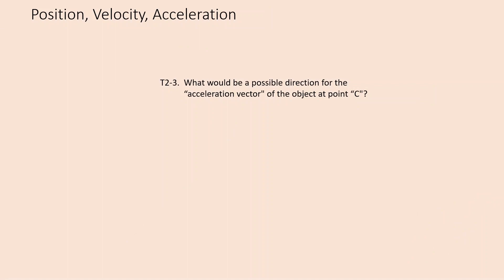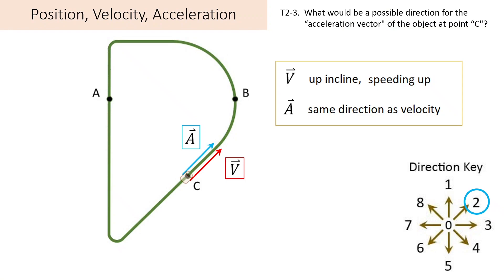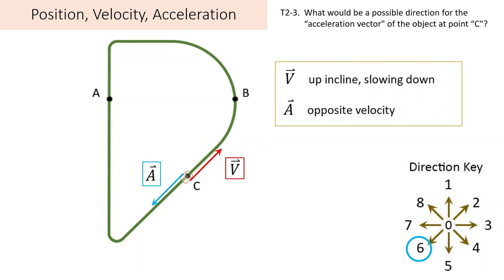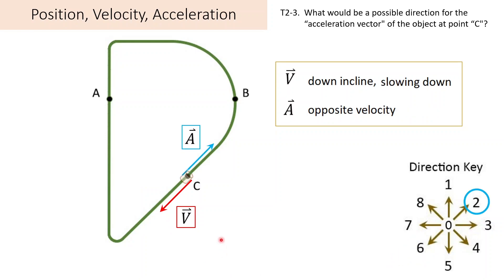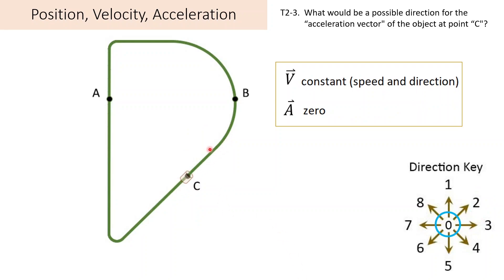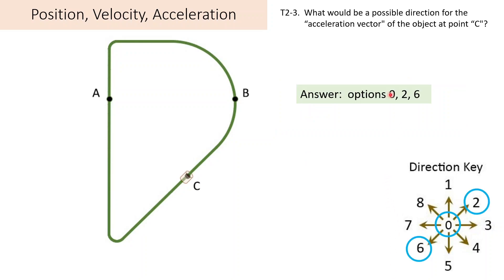Acceleration at point C. Same cases as before: we could have been on the way up the incline speeding up, so acceleration in the same direction as velocity — option 2. We're on the way up the incline but slowing down, acceleration opposite — option 6. Or we could be coming down the incline and speeding up — acceleration in the same direction, that's 6. Or we're headed down the incline but slowing down — acceleration opposite — option 2. Or a constant speed, either at rest or moving at constant speed up or down the incline — no acceleration. So we get options 0, 2, and 6.